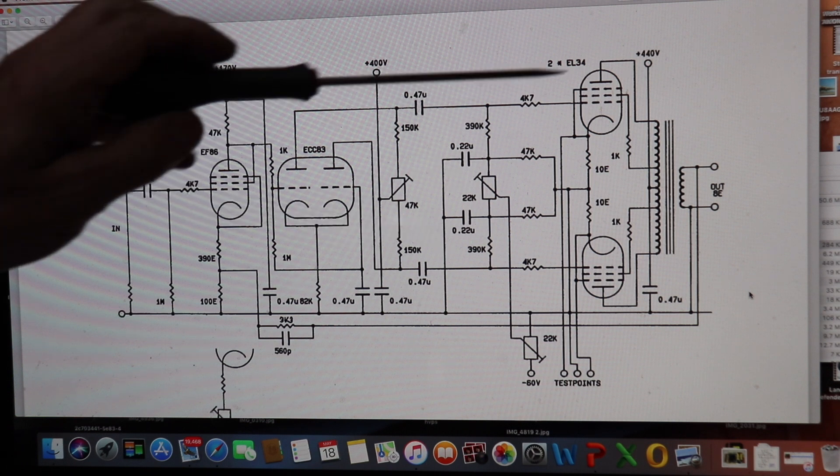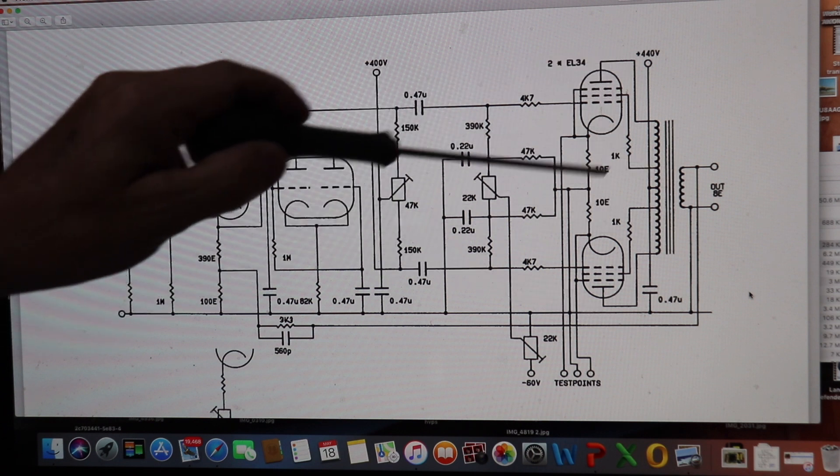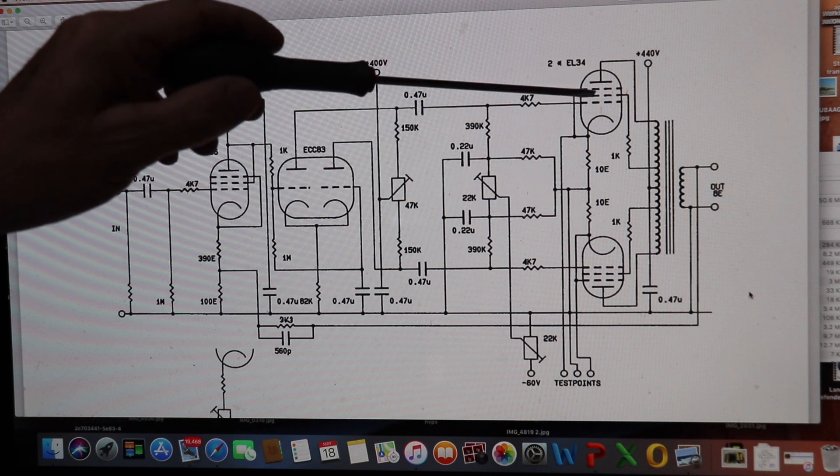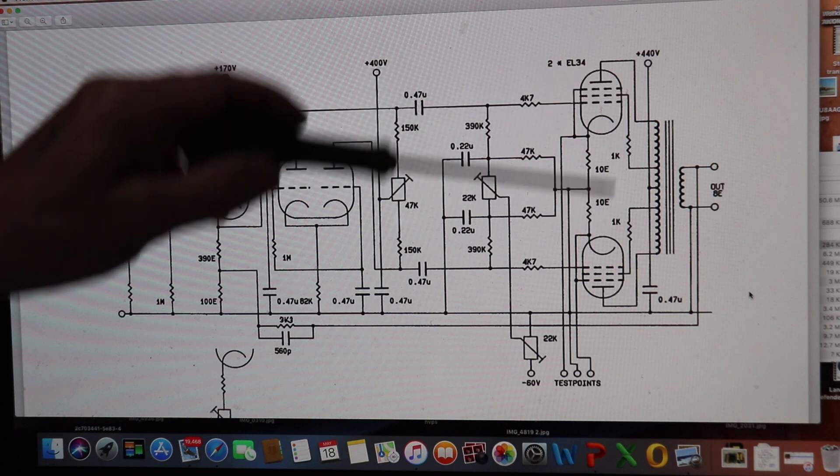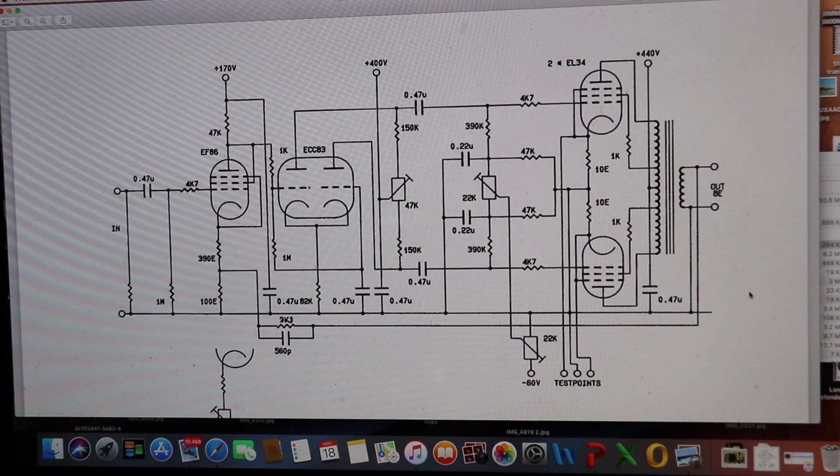So, that's one thing you have to bear in mind. So, what I've done with mine is the transformer I've got does not have taps for ultralinear configuration. And I've had to go for a separate supply to the screen grids of the GU50s, which are regulated. And it seems to work. I mean, ultralinear is obviously ideal, but with the transformers that I've got, I had to make do with that. So, and it seems to work all right.